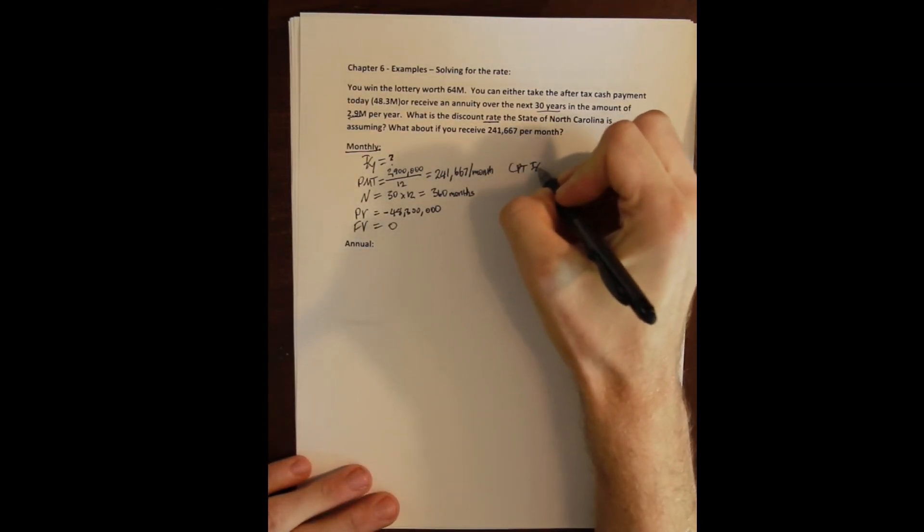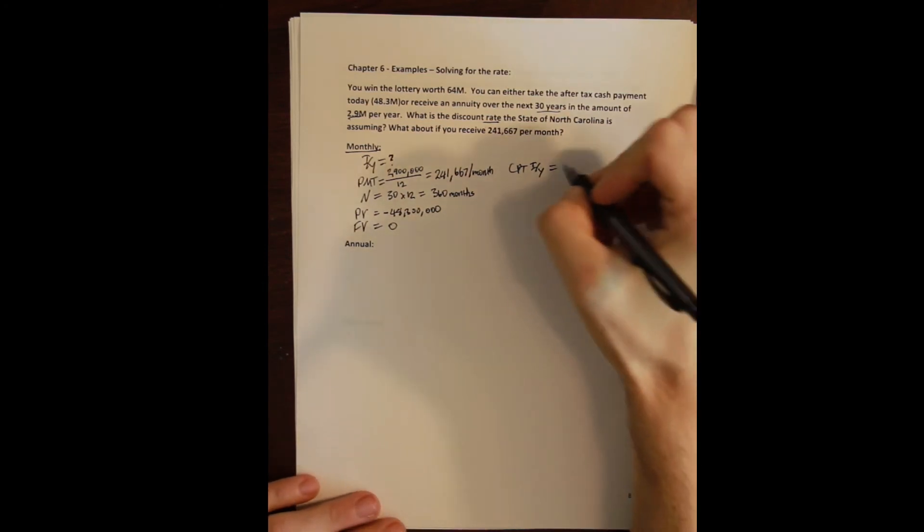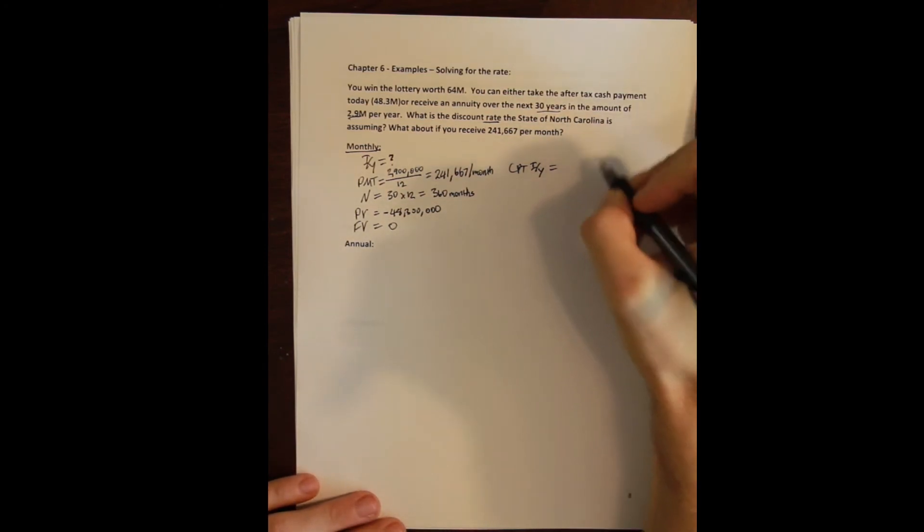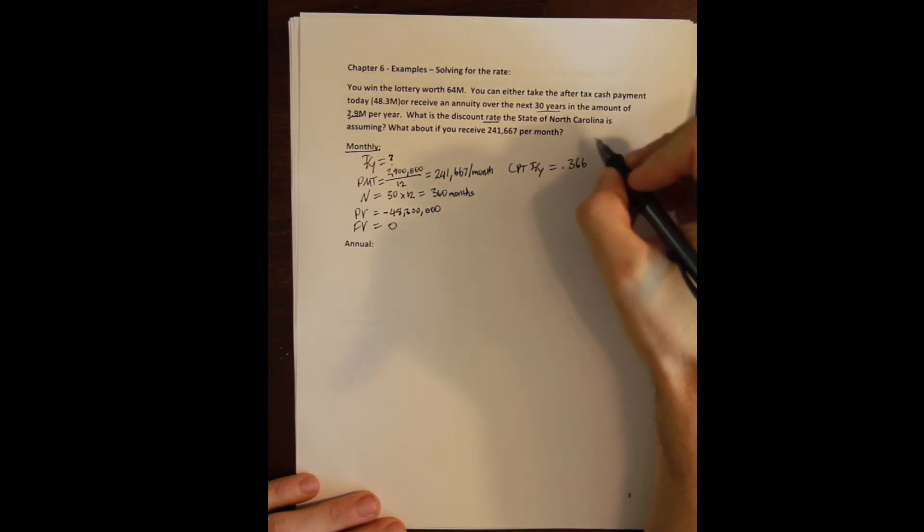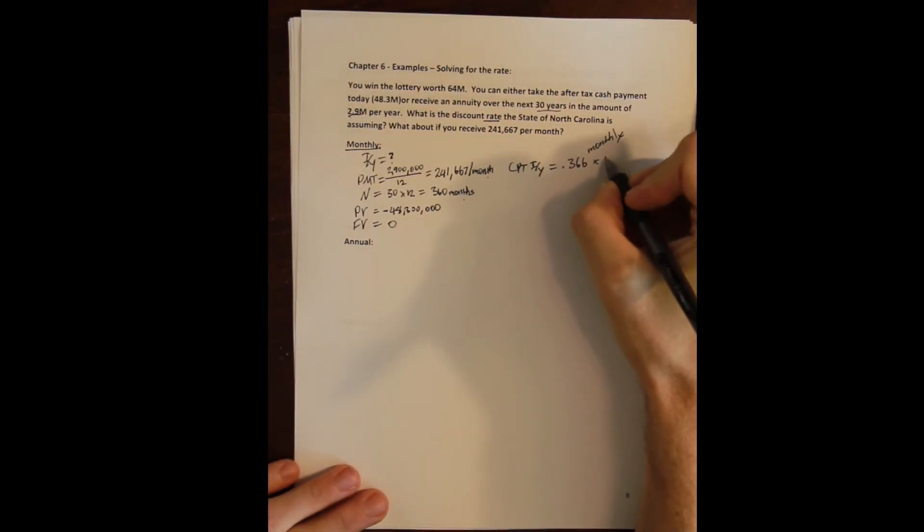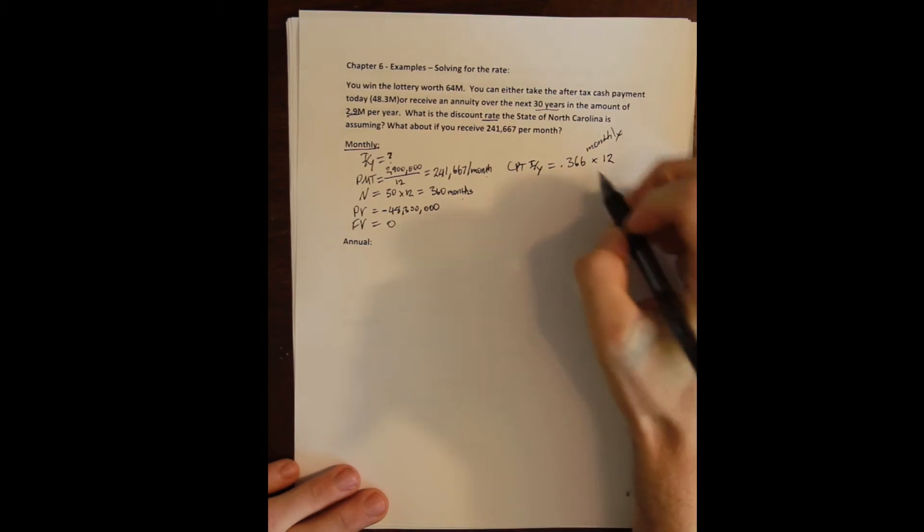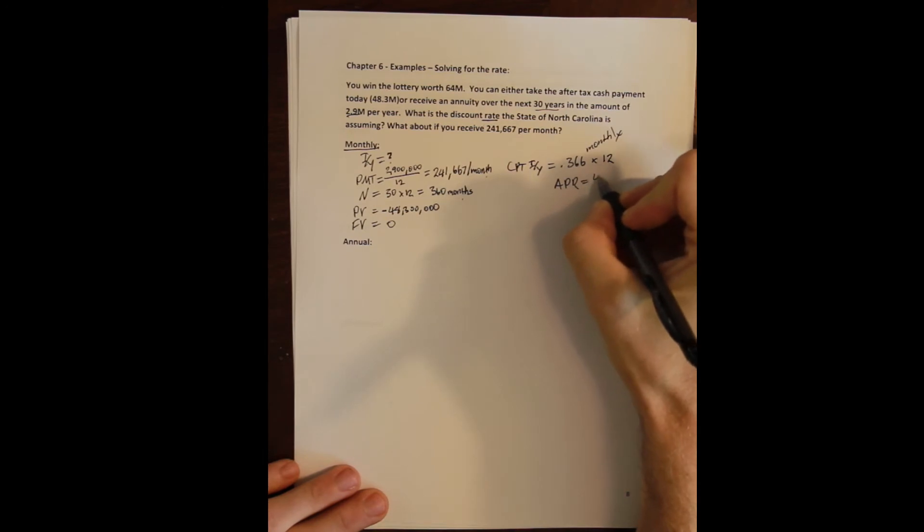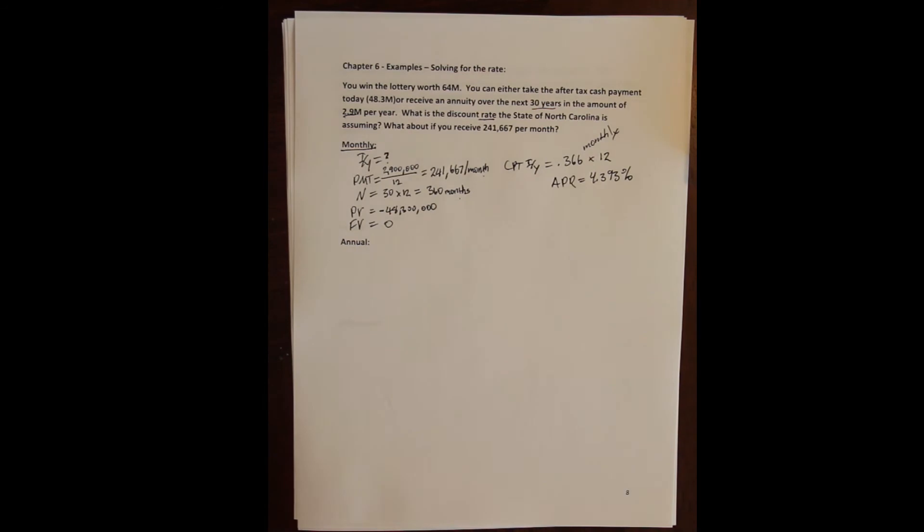Now we can compute our I/Y here and we'll get 0.366. Right, this is our monthly rate. Remember, the period of the output will agree with the compounding period of the inputs. And since we have been talking about rates, we know that if we multiply the monthly rate by 12 that will give us what's called the APR, which is 4.393%.